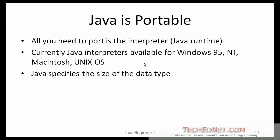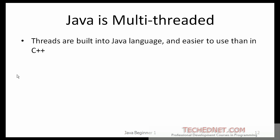Java is also portable. All you need is the interpreter — the Java Runtime — which is available on a variety of operating systems, including Windows, Macintosh, Unix, etc. Java is also multi-threaded. Threads are built into the Java language and are a lot easier to use than in C++.